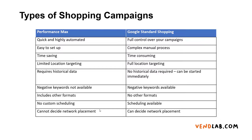To set up a Performance Max campaign, you really only need to set up two things: your feed and your target. You need to set your ROAS target — what percentage return you want on your ads — and supply your shopping feed, and that is pretty much all you need to do. With Google standard shopping, you have much more control: you can set negative keywords, location targeting, and scheduling. But it takes a long time, and in my experience the performance is not necessarily that much better. My advice overall is to use Performance Max because it is much easier to set up and the performance is pretty good.